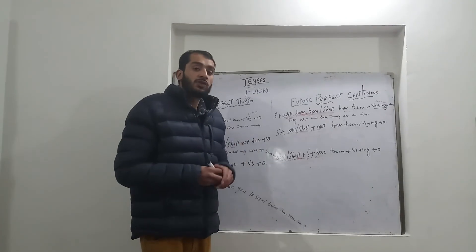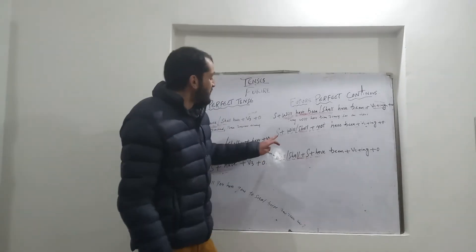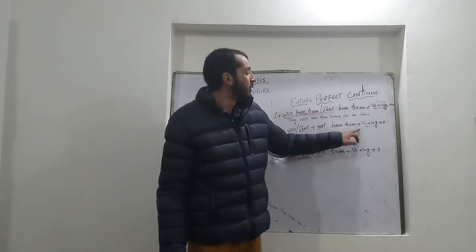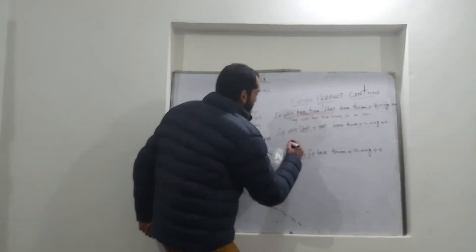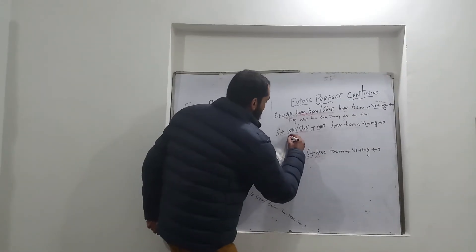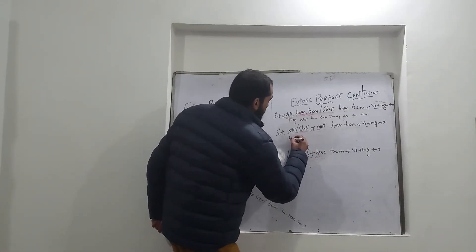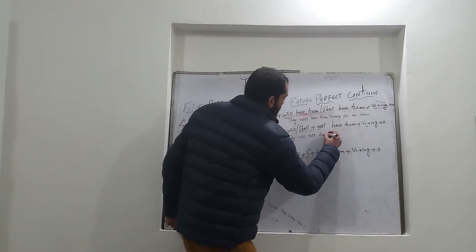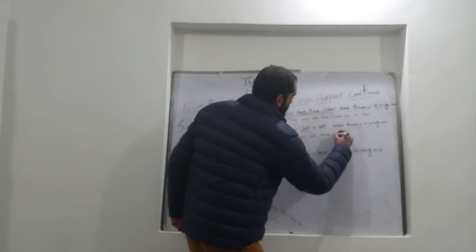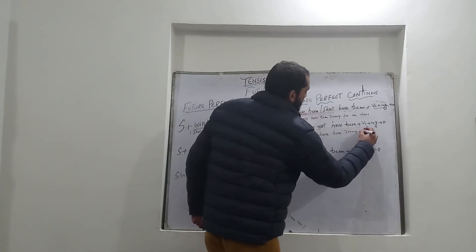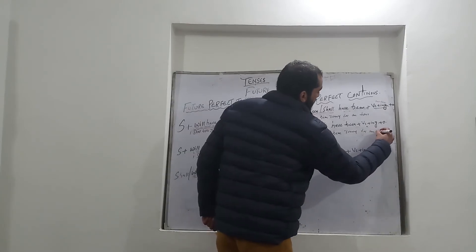For negative sentences, the structure is: subject plus will or shall plus not have been plus verb base form plus -ing plus object. For example: They will not have been running for an hour.